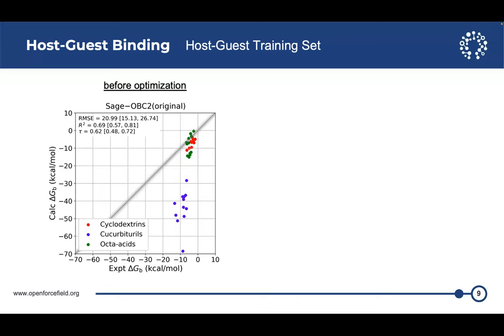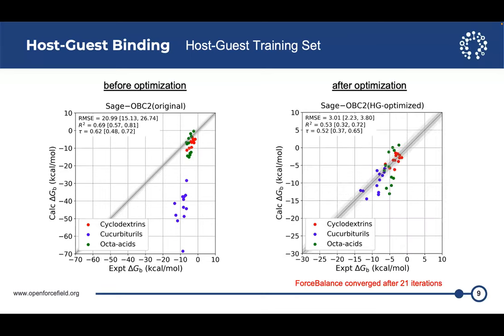Now we fit this into ForceBalance, and ForceBalance converged after 21 iterations. And we get a big improvement in the binding free energies. So the RMSE dropped from about 21 kcal to about 3. But we do see the R squared deteriorate a bit from 0.7 to about 0.5. This is the results for the training set.